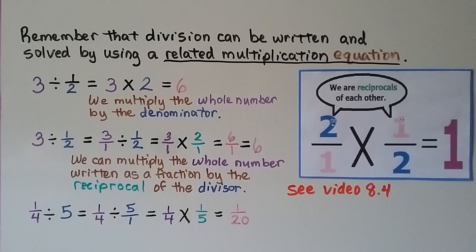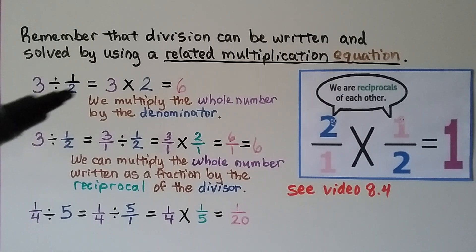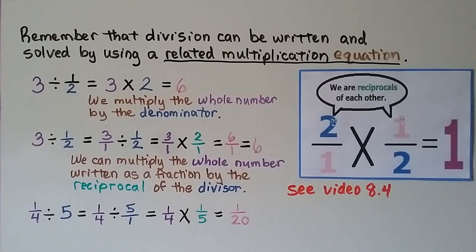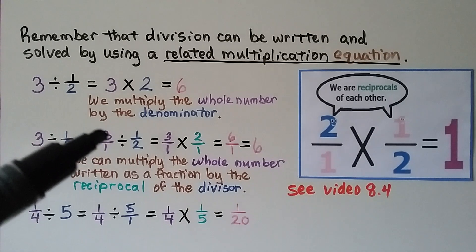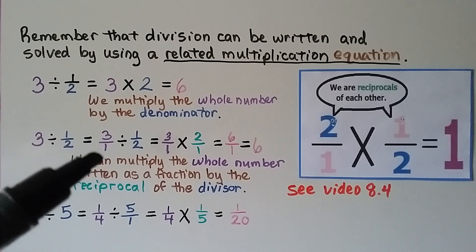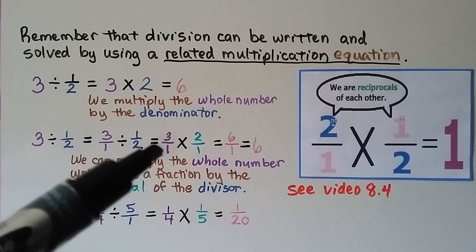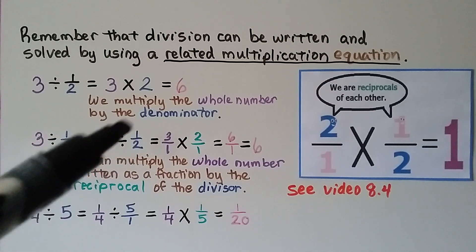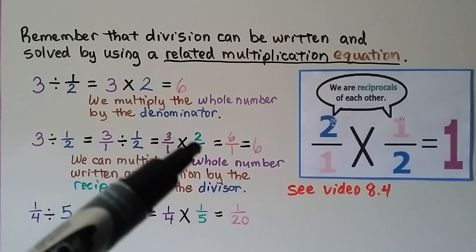And remember that division can be written and solved by using a related multiplication equation. We have 3 divided by 1 half. We can just multiply the whole number 3 by this denominator, 2, because it's a unit fraction. And 3 times 2 is 6. So we know 3 divided by 1 half is equal to 6. We also learned in video 8.4 that is linked in this description about reciprocals. You're going to learn a lot about that in the beginning of 6th grade. It's equal to 3 over 1. We write the 3 as a fraction divided by 1 half. And we can use multiplication by multiplying this 3 over 1 by the reciprocal of this 1 half.